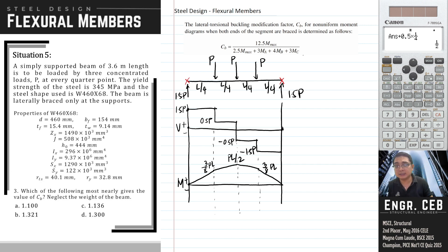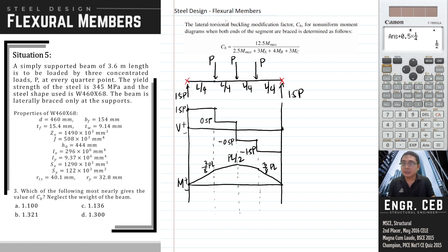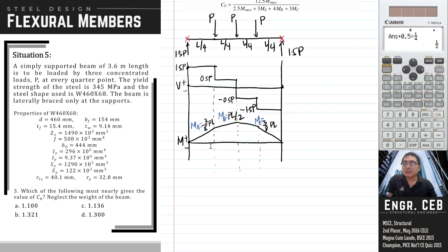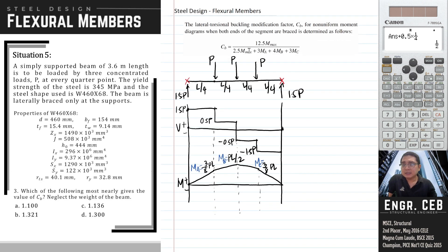MA is the moment at the first quarter point of the unbraced segment, which is the entire beam length since lateral supports are only at the supports. So MA = 3PL/8. MB is the moment at the second quarter point (midspan): MB = PL/2. MC is the moment at the third quarter point: MC = 3PL/8. Mmax is the maximum moment within the unbraced segment, which equals MB = PL/2.